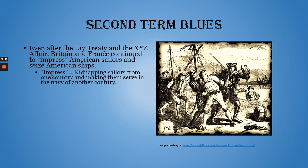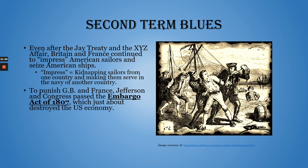We're not going to study every presidency from 1 to 45, but this theme of presidents getting reelected and having a tougher time during their second term is going to continue over and over again. Even after the Jay Treaty, the XYZ Affair, and the Quasi-War from Adams' presidency, Britain and France continued to impress American soldiers — essentially kidnapping sailors from one country and making them serve in the navy of another. So Jefferson decided he needed to punish both countries and passed the Embargo Act.